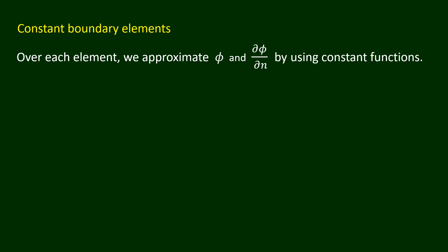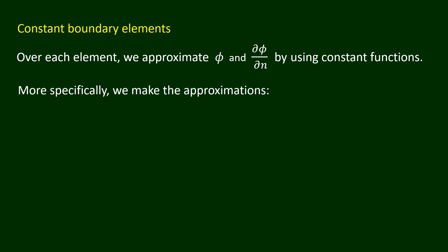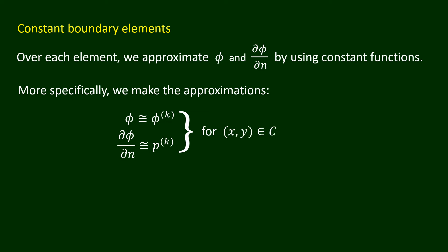More specifically, we make the approximations: phi equals approximately phi_k, and del phi over del n equals approximately p_k, for point xy on the straight line element ck.